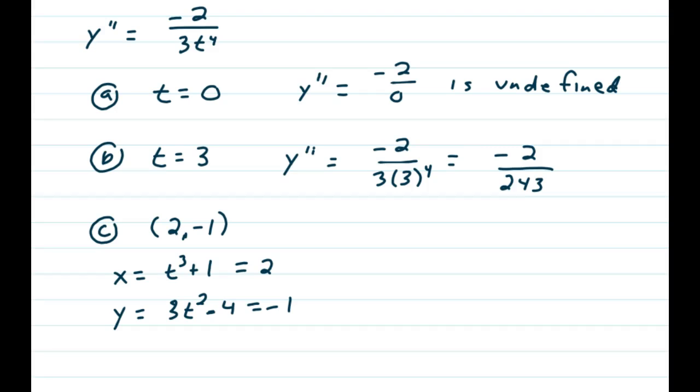And that's pretty easy to see if you take a look. If you let t be 1, you would get 1 cubed plus 1 is 2. And down below for y, you'd have 3 times 1 squared minus 4 is negative 1. So the value that we need to use here is t is equal to 1.